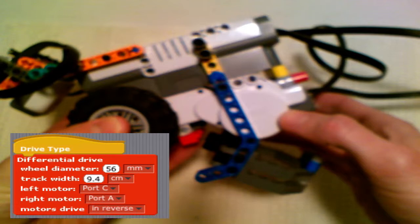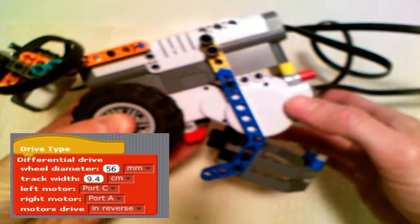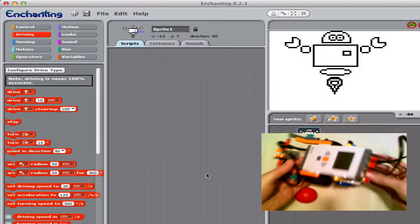The rule of thumb is, set it up one way, tell the robot to drive forward, and if it doesn't, set it up the other way, and you've got it figured out. That's how you quickly set up the differential drive.